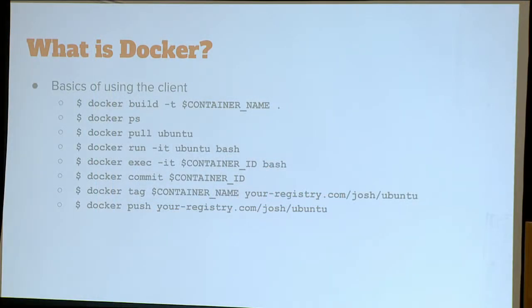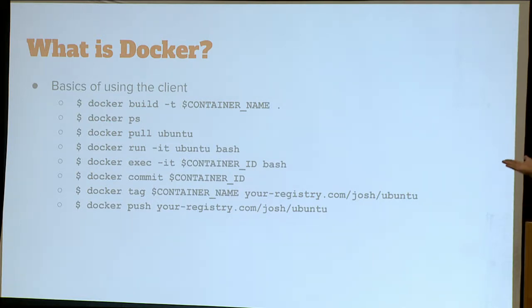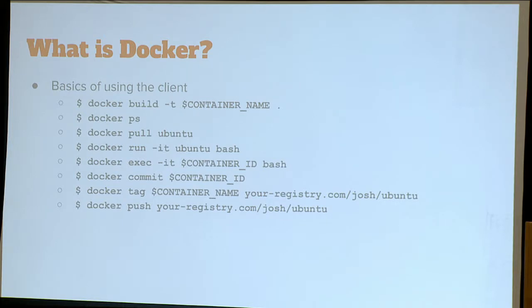We're going to talk about the basics of using the client. Docker build: we can build Docker images on our local system using Dockerfiles. Docker ps will list the containers that are running. Docker pull will pull an image from a registry — in this case, we're pulling Ubuntu from the Docker Hub registry, which is shorthand for library/ubuntu. Docker run with the -it flag is basically an interactive TTY — that will launch it as a shell you can work with at the command line. If you have a running container and want to do stuff in it, you do Docker exec -it and pass the container ID. And Docker commit will allow you to save something in a running container to an image, which is really cool.